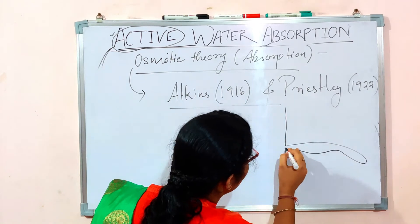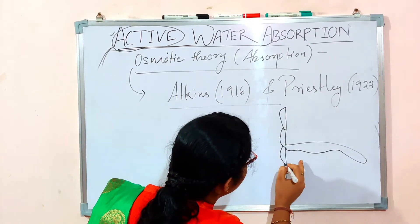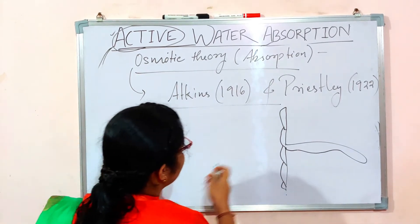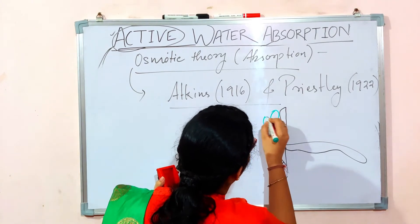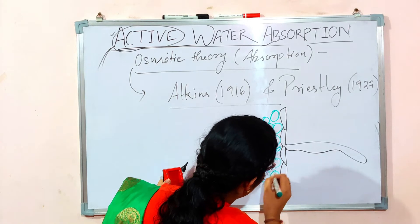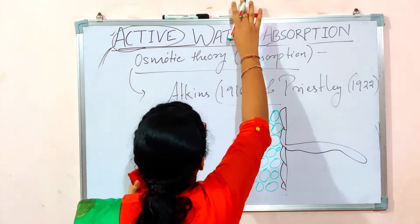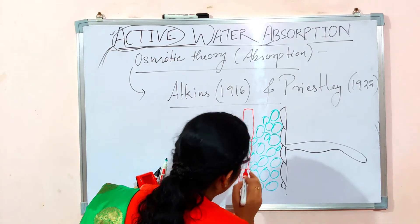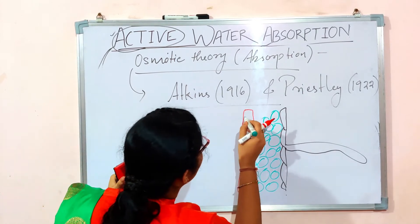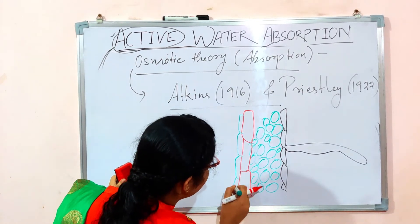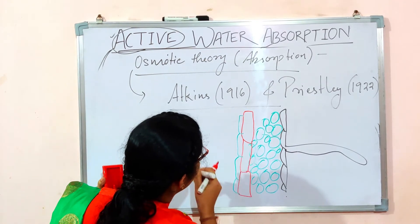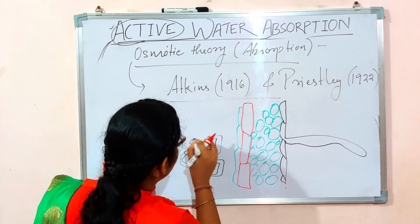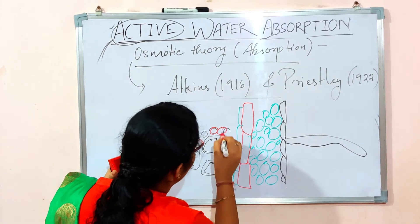Let me draw a diagram for this theory. This is the root hair. These are the epidermal cells of the root hair. The green line represents the cortical cells or cortical layer. Then comes the endodermis layer, marked in red. After that is the pericycle layer, and then the vascular bundle containing the xylem elements and the phloem cells.